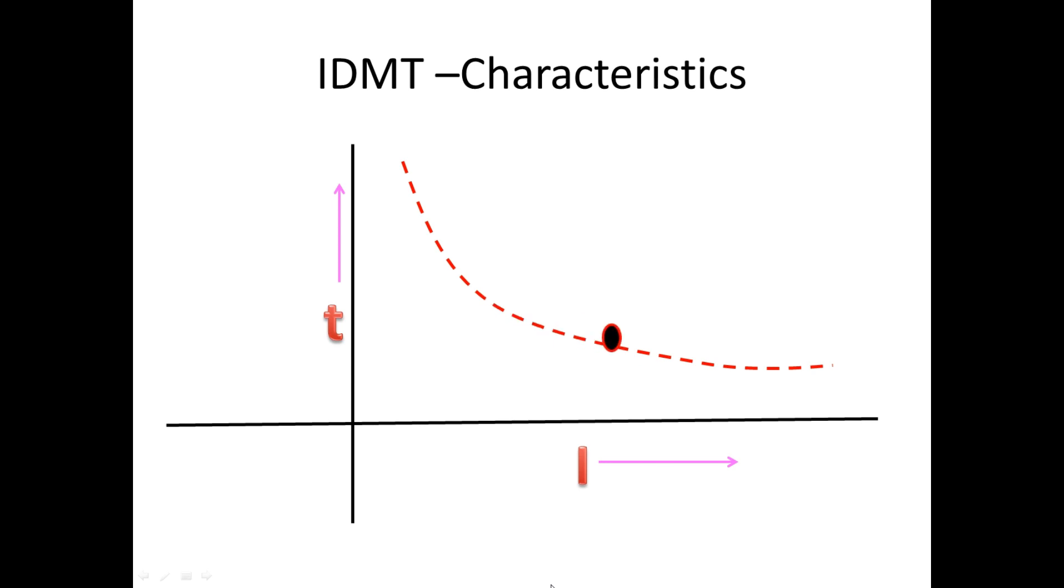And also in power system we use various types of IDMT. Commonly we have 4 types: normally inverse or standard inverse, second one is very inverse, third one is extremely inverse, fourth one is long time inverse.